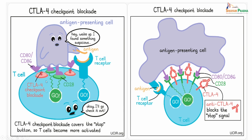Now let us see how this can be targeted. If we are able to get rid of the stop button, then the immune reactions can happen. The T cells will be able to recognize the tumor cells and elicit an immune response to get rid of the tumor. What is done in a CTLA4 blockade is we use a particular antibody which can bind to and block the CTLA4. When CTLA4 is blocked, this can in turn allow binding to CD28, and this CTLA4 checkpoint blockade covers the stop button. The T cells are now activated - they say, I will go and check out. The anti-CTLA4 antibody selectively binds to CTLA4 blocking the stop signal, which means the cells can go and attack the tumor cells.